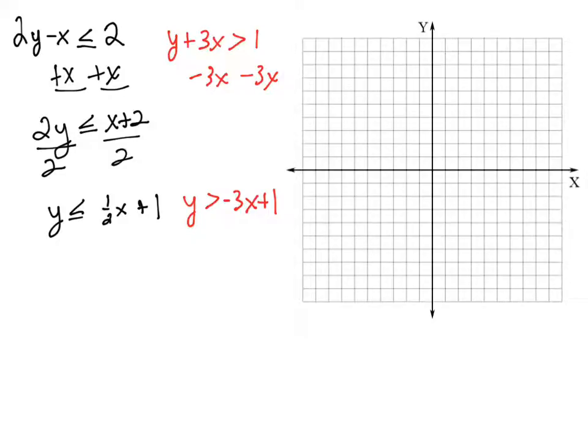The first inequality has a y-intercept of positive 1. So start at 1, and then we're going to go up 1, right 2. So our line goes through that y-intercept of the slope of 1 half. So there's the first line.